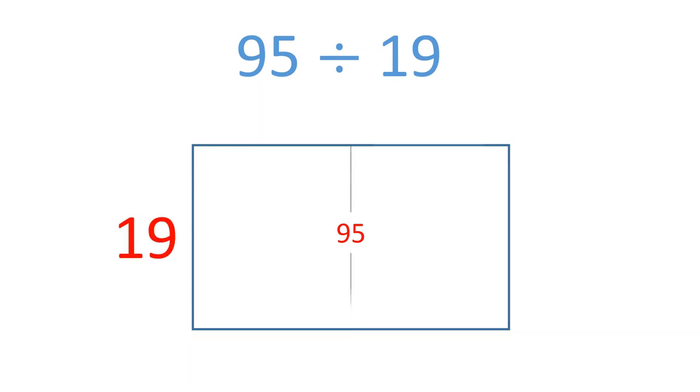19 is a bit trickier to multiply, so to make it easier, I'm going to round it up to 20. If I count by 20s, I can count 4 times before I go over 95.